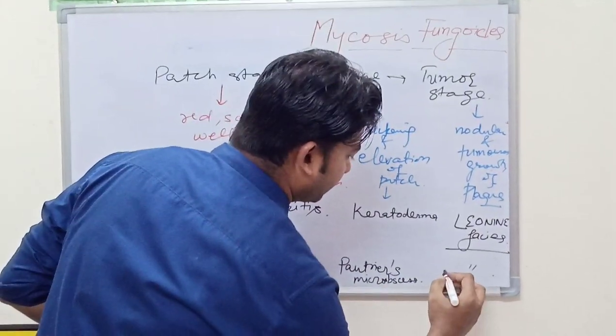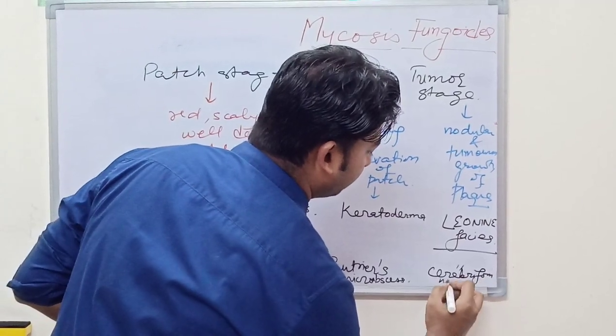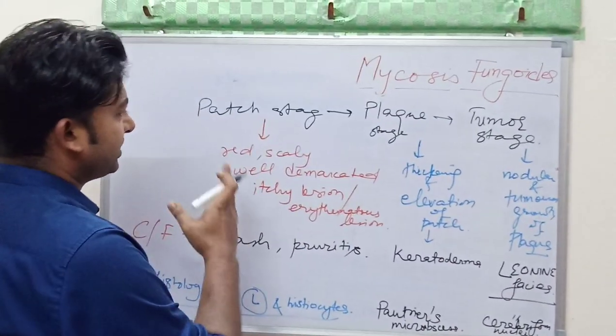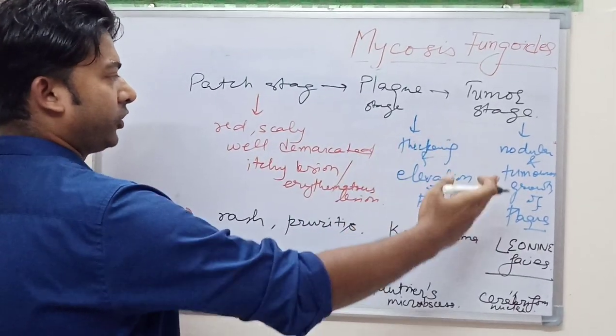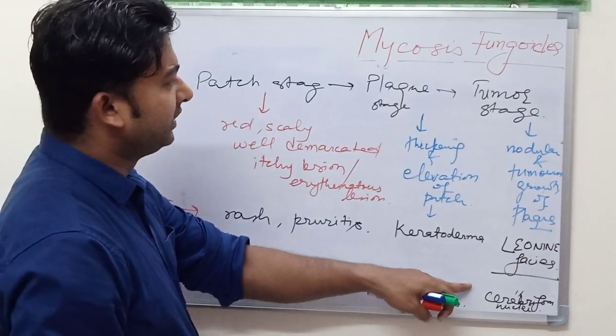The cell has got characteristics of cerebriform nuclei. As the disease progresses from patch stage to plaque to tumor stage, the prognosis of the disease is very poor.